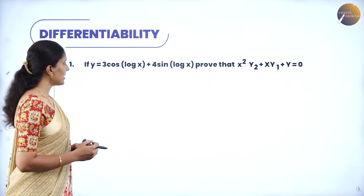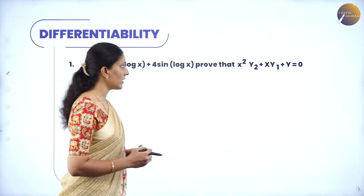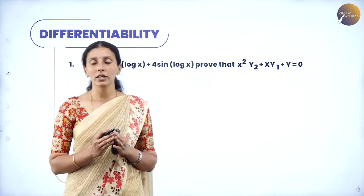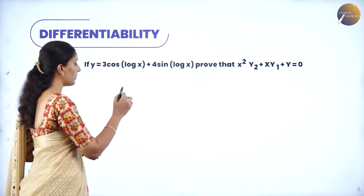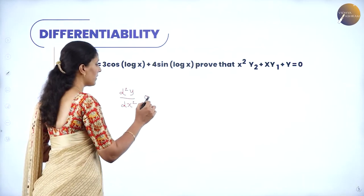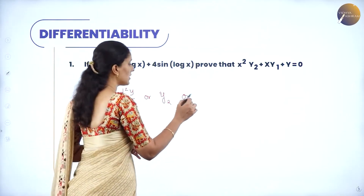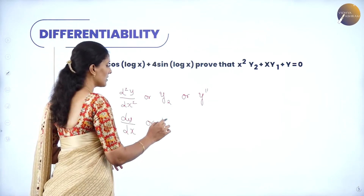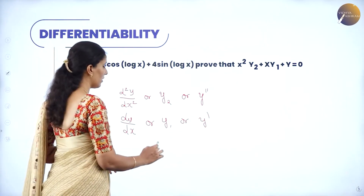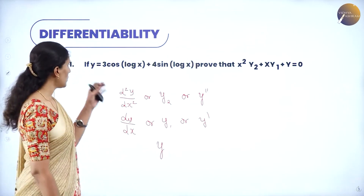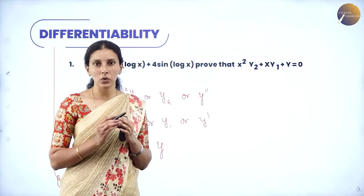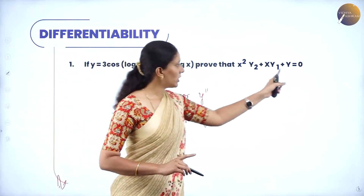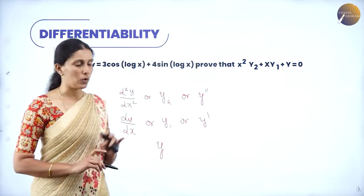Our first question is: if y = 3cos(log x) + 4sin(log x), prove that x²y2 + xy1 + y = 0. The second order derivative can be denoted as d²y/dx², y2, or y double dash. Similarly, the first order derivative dy/dx can be written as y1 or y dash. The function is denoted by y, where y = f(x). We have to find both y2 and y1, substitute in this equation, and show the value equals 0.